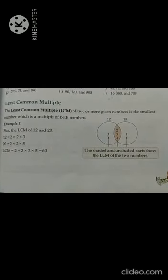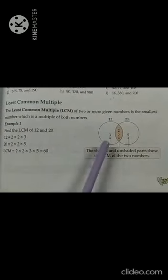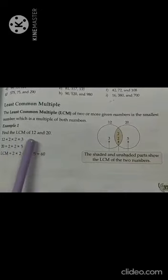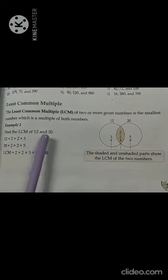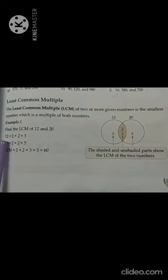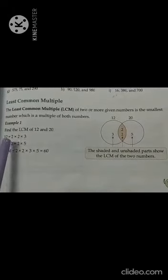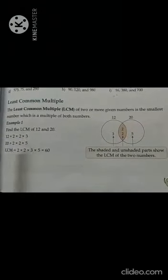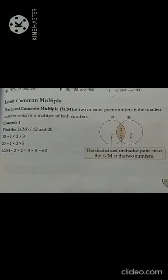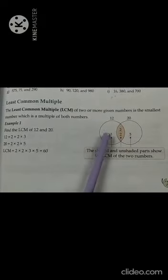For example, here you can see in the picture. This is one circle — number 12. This is another circle — number 20. They have asked you to find the LCM of 12 and 20. First, find the factors of 12. Factors of 12 are 2 × 2 × 3. Factors of 20 are 2 × 2 × 5. Write down the factors in the circles.